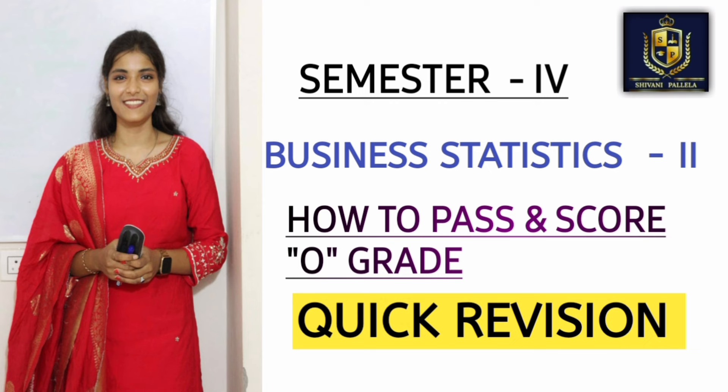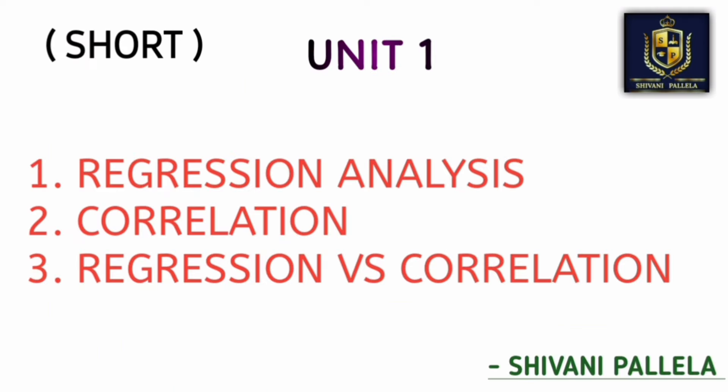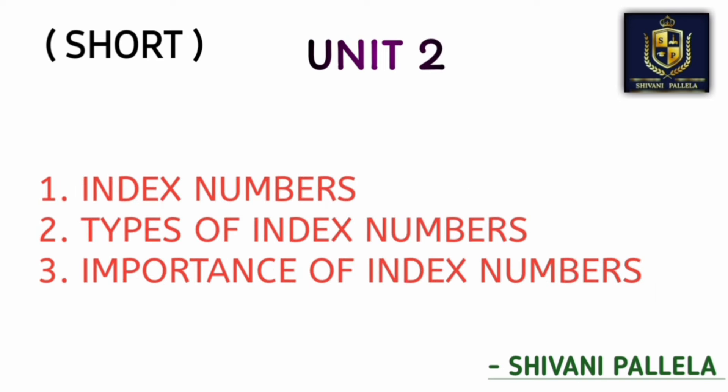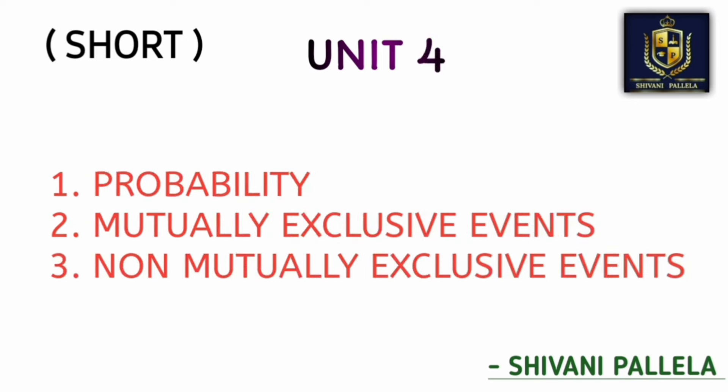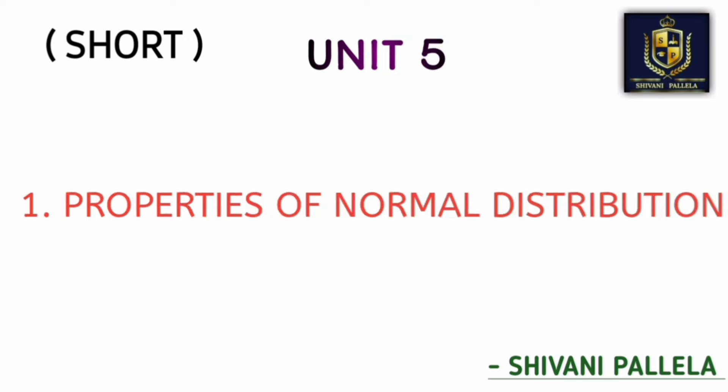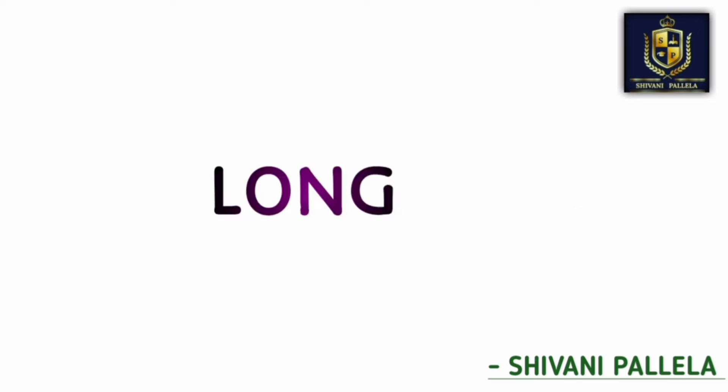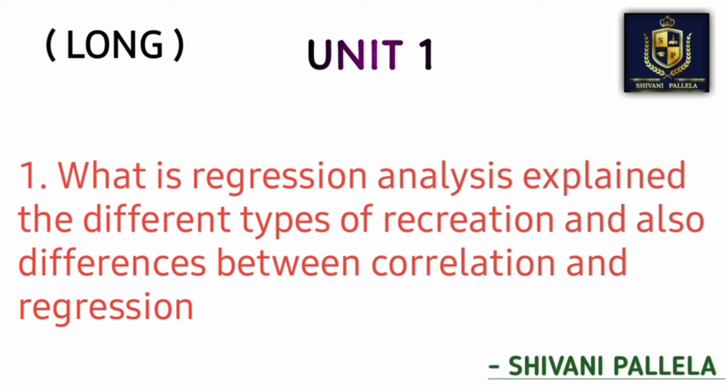For the theory part, regression will be asked, and from index numbers — uses of index numbers, meaning importance of index numbers — they will ask. Uses of time series analysis we are having a chance. Mutual exclusive events, non-mutual exclusive events, and normal distribution — these five theory questions are enough for Part A.